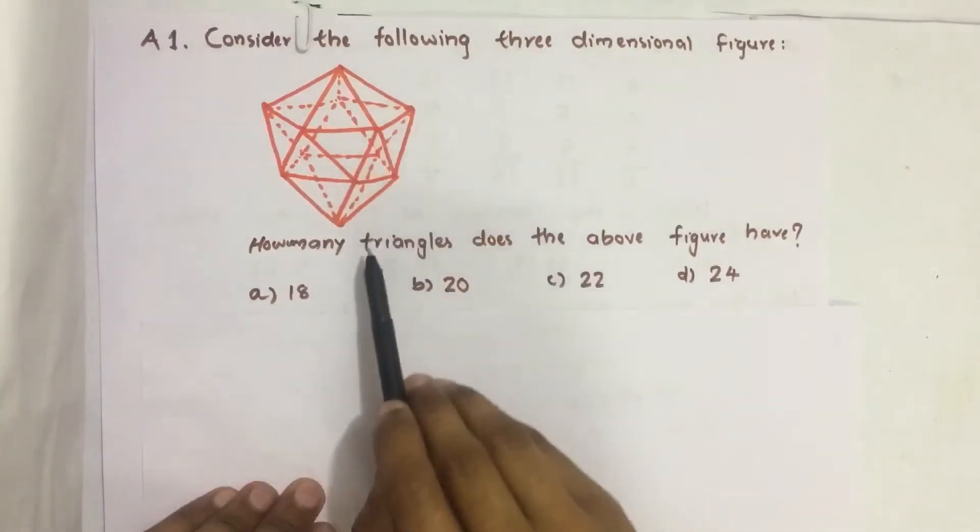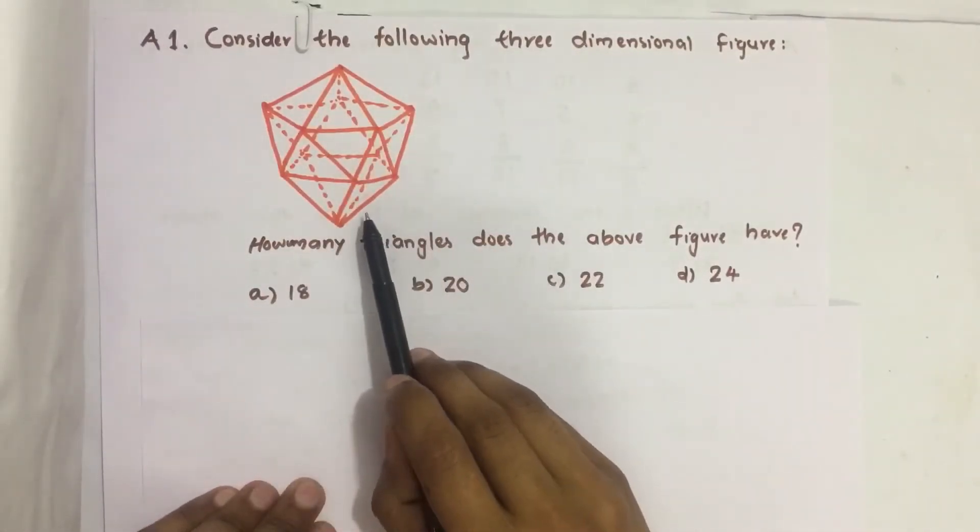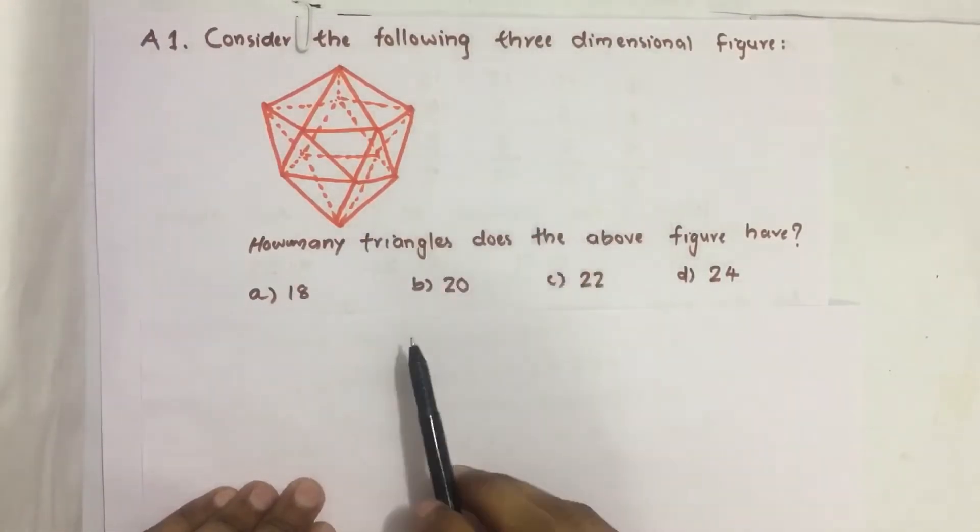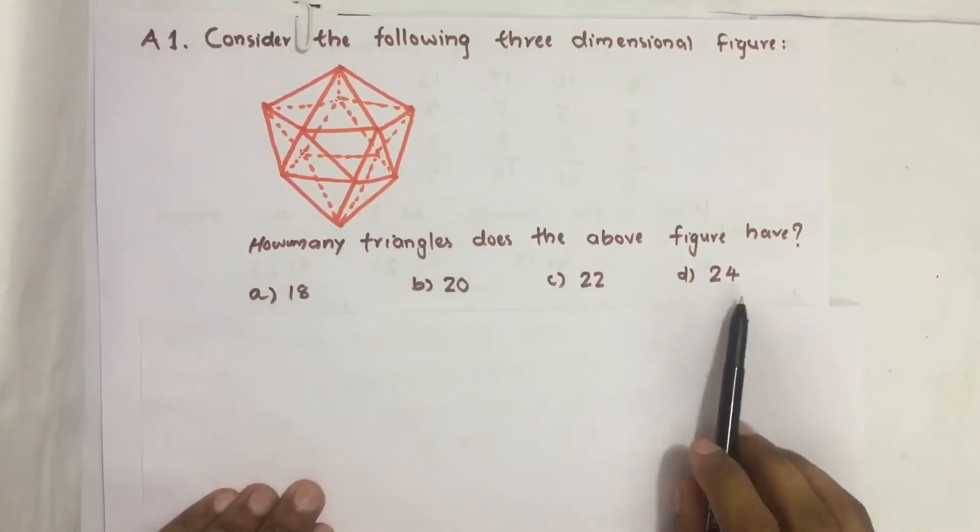This is the given figure. The dotted lines indicate the sides of this 3D figure behind the frame, and we have four options.